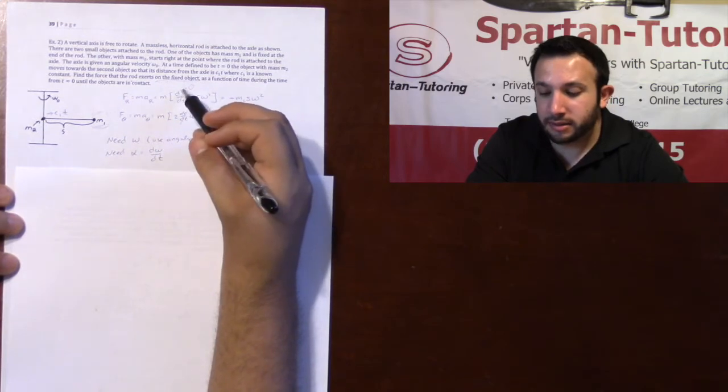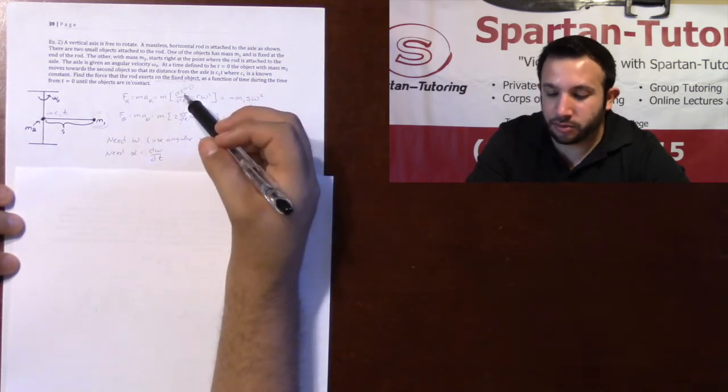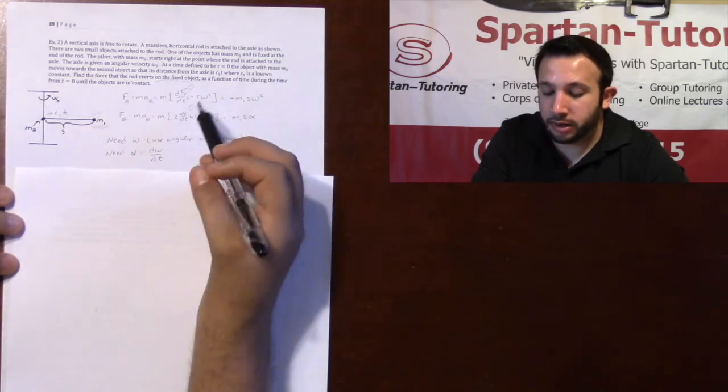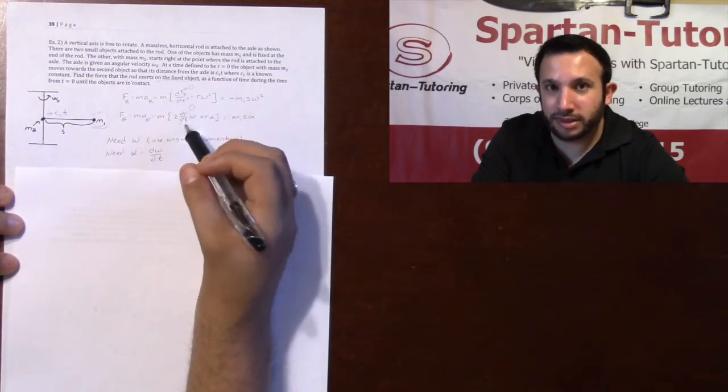And your dr/dt, your d²r/dt², this ain't changing. m1's not going anywhere. That's why both of these are 0.